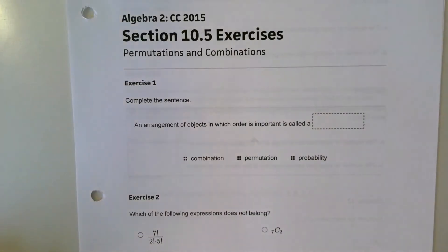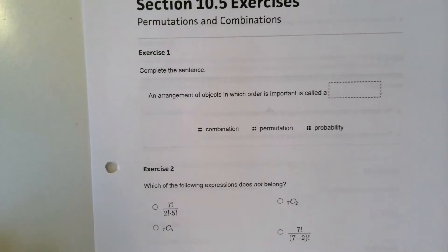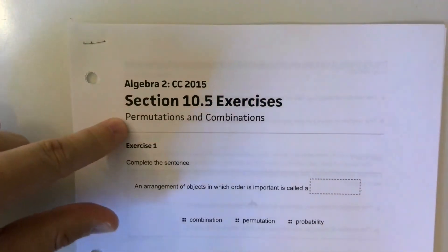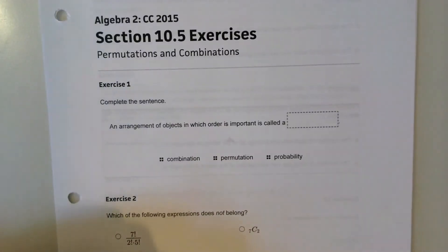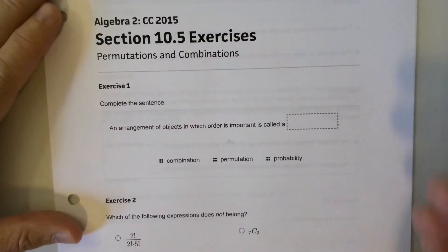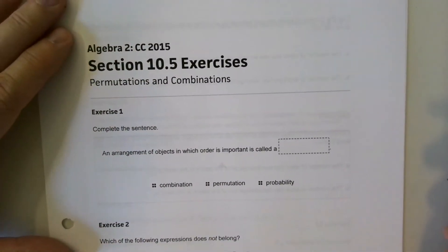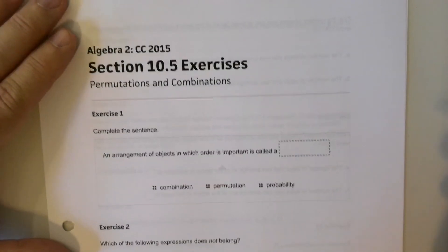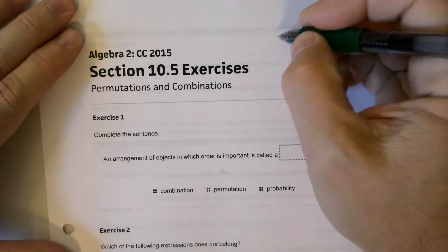Hey everybody, it's Mr. Vils again, and this is section 10-5, something called Permutations and Combinations. I'm going to try and give you a little rundown of what a permutation is, what a combination is, and that thing.